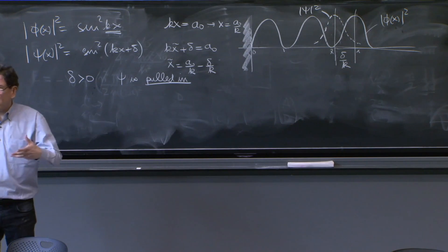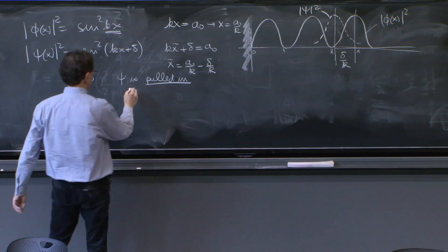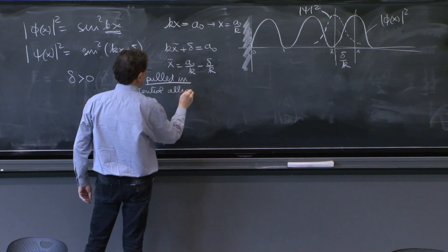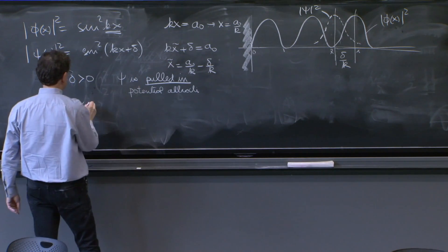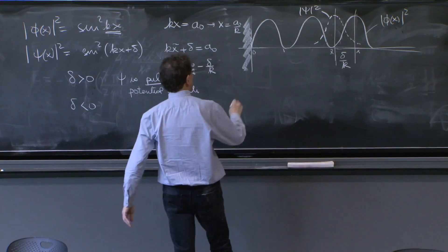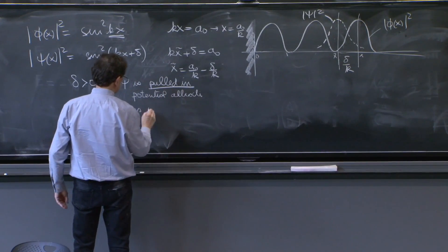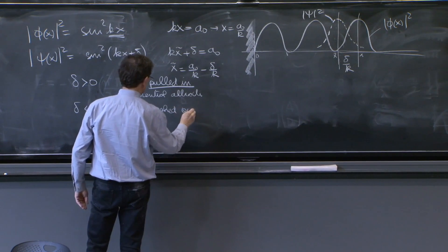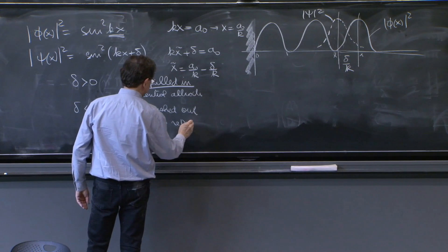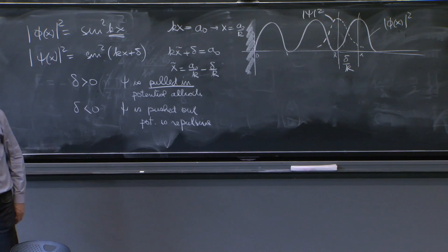So what could we think of this? The potential is attractive. Attractive is pulling in the wave function. Delta less than 0, the wave is pushed out, would be in the other direction, and the psi is pushed out. And the potential is repulsive. So a little bit of information, even from the signs of this thing.